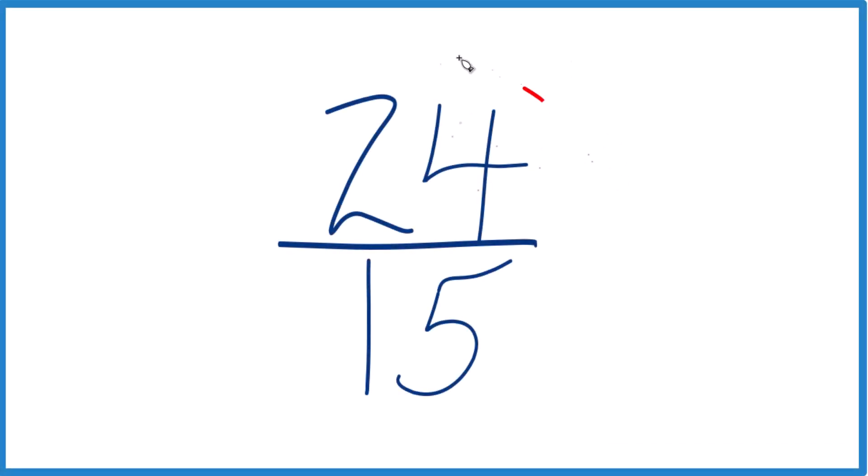Let's simplify the fraction 24 fifteenths and then write it as a mixed number. First, if we want to simplify 24 fifteenths, we need to find the factors of 24 and 15.